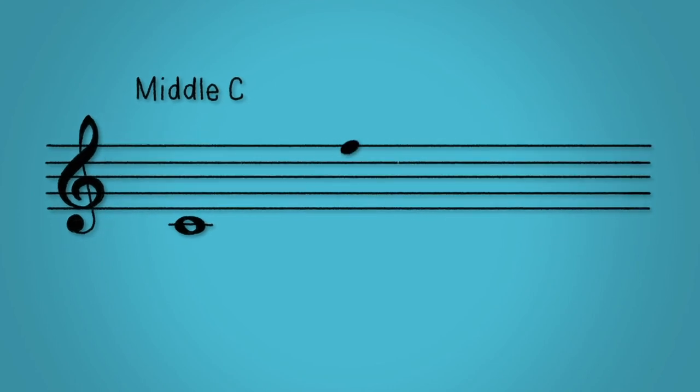Notes can either sit on a line or in a space. The vertical position of the note defines the pitch. The higher up the stave, the higher the pitch. The lower it goes, the lower the pitch.